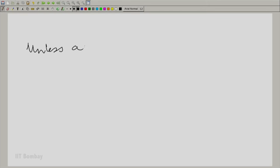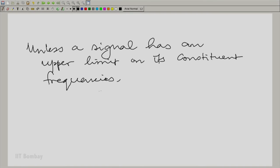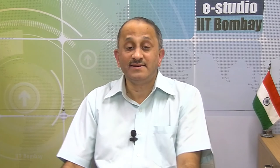Otherwise, there is no question of being able to distinguish the impostors from the original. That is, the impostors may become smaller than the original in all other cases. So, what are we talking about? We are talking about a signal having an upper limit to its constituent signal frequencies. That is a very important conclusion. So, what we are saying is, unless a signal has an upper limit on its constituent frequencies, the impostors may start having a frequency smaller than constituents after a point.